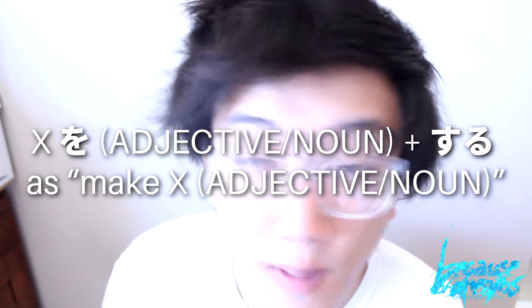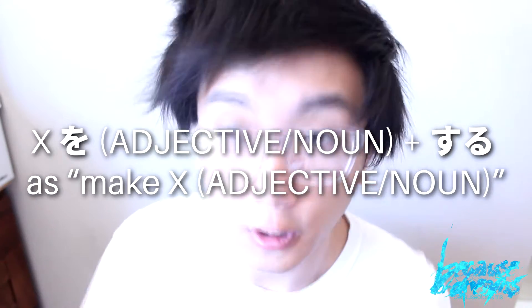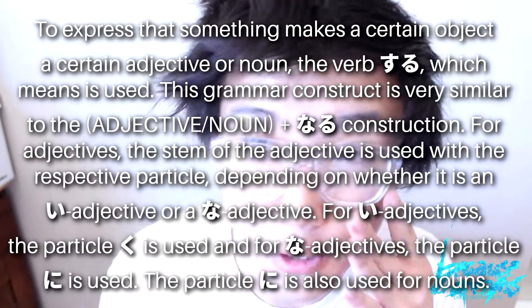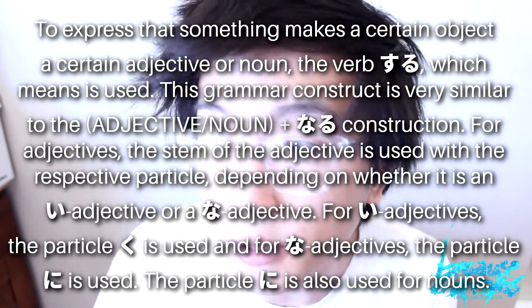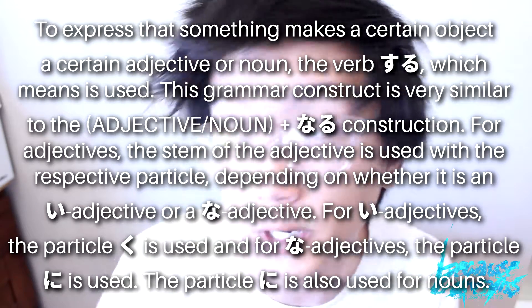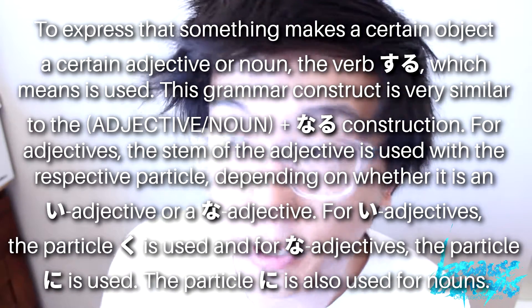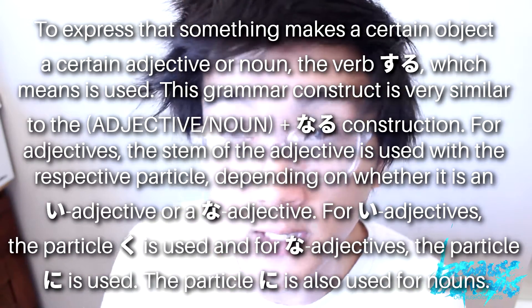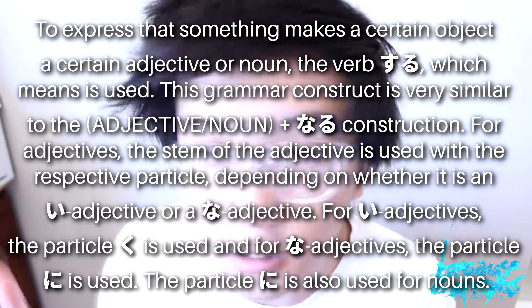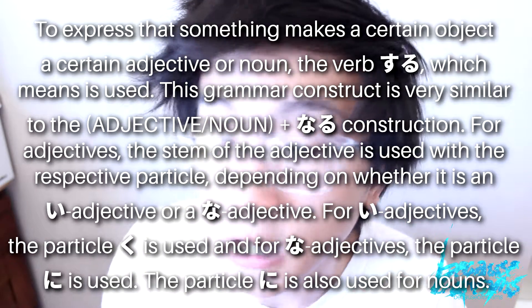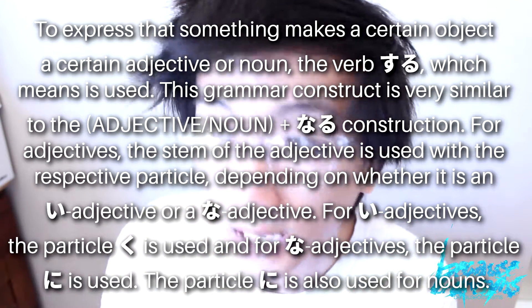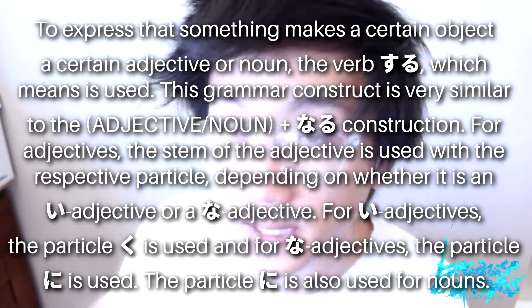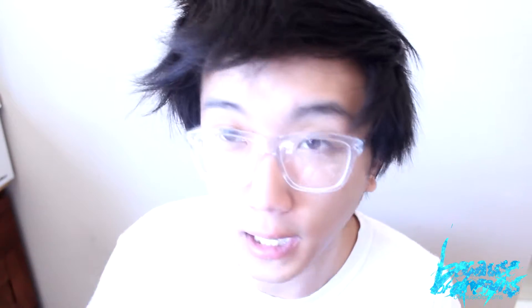For example, in English this might be something like 'to make your house prettier.' The reason this grammar pattern is so associated with the previous one — to become an adjective or noun with the verb naru — is because it's basically the same thing. It just uses the verb suru instead to mean 'to make,' and we conjugate the adjectives and nouns the same exact way. With that said, let's jump into some example sentences to get a clear idea of what this actually means.